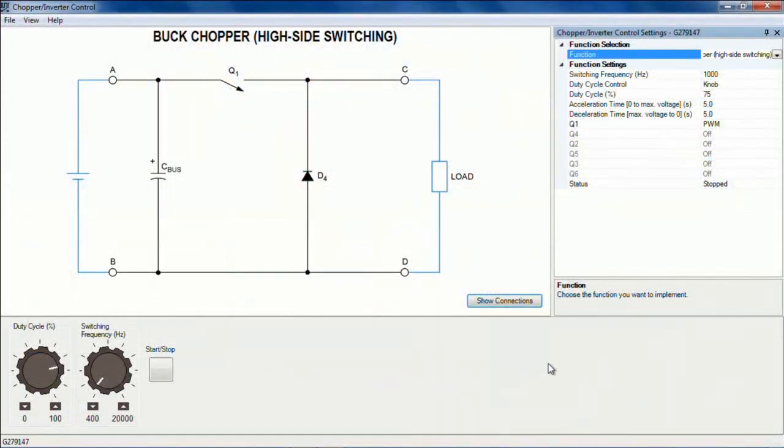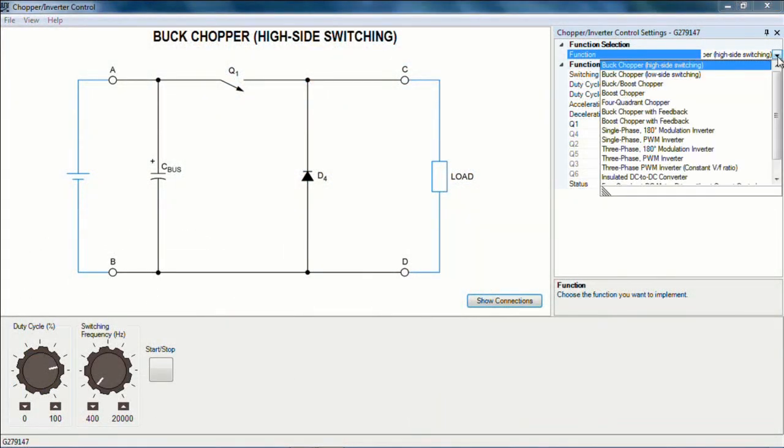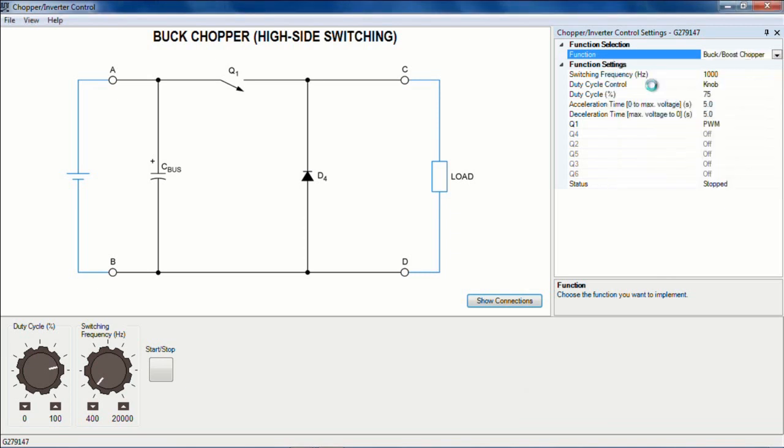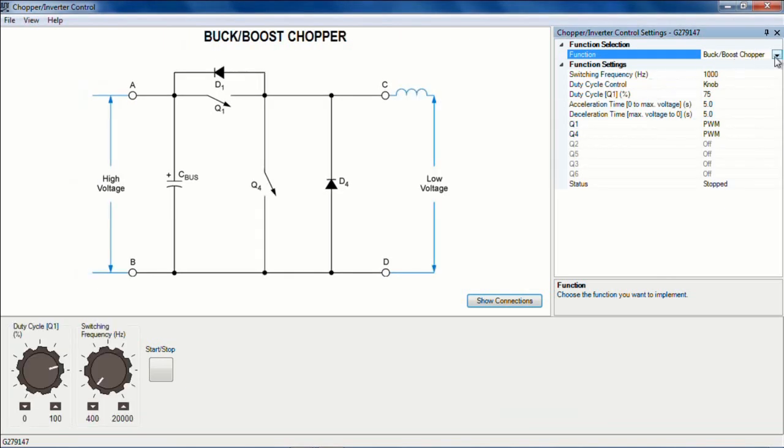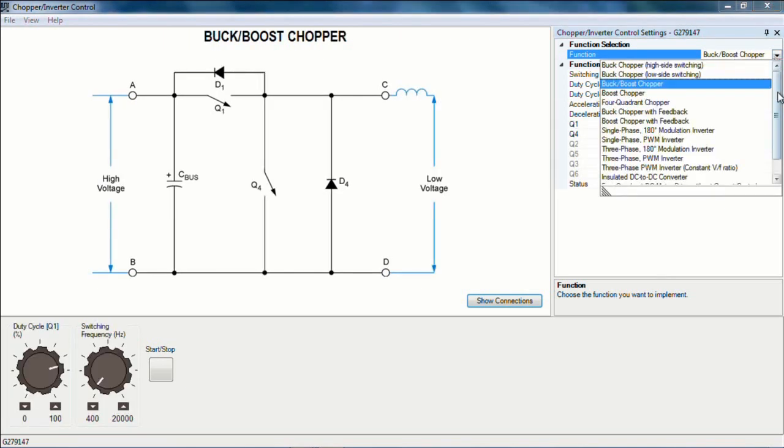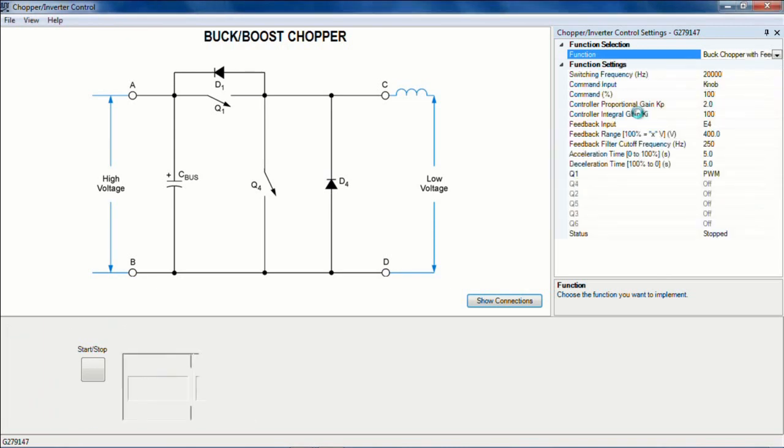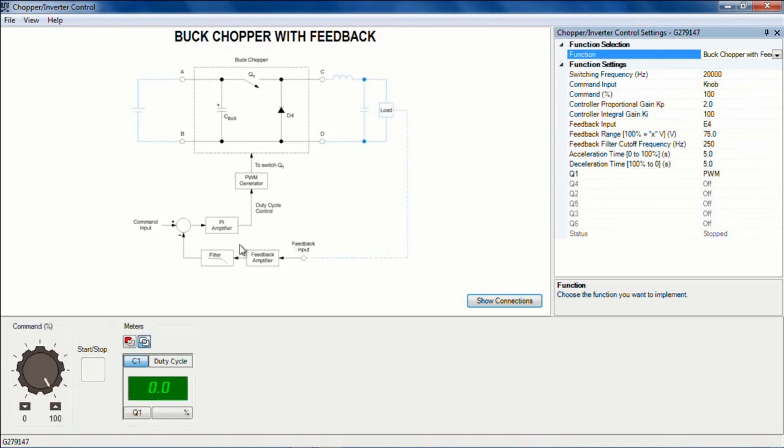The other modes that the course will explore are the regenerative braking by using a buck boost chopper, and also a drive that would include feedback. So in that case I would want a buck chopper with feedback. And I have access to the various parameters, the proportional gain, integral gain, filter, and so on.